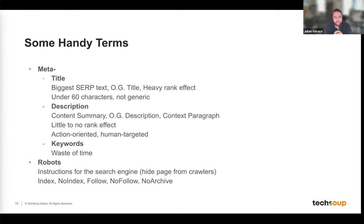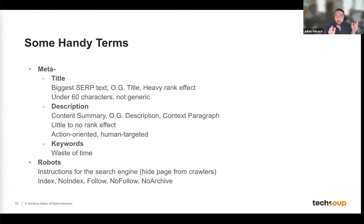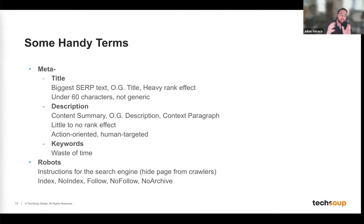The final term is robots.txt — these are instructions you can put on your site to tell Google how to crawl it. For example, you might have private pages or member-only pages that you're not ready to share. You can specify which pages to crawl and which not to, and you can also manage backlink authority with these settings.